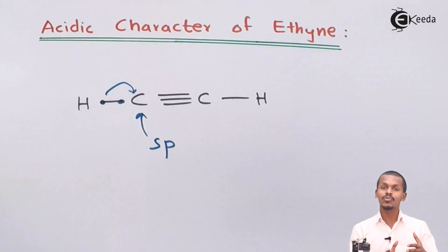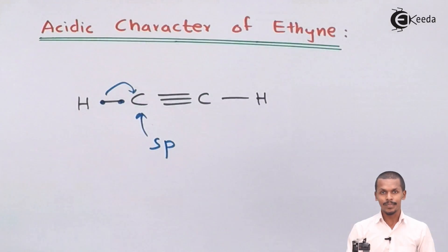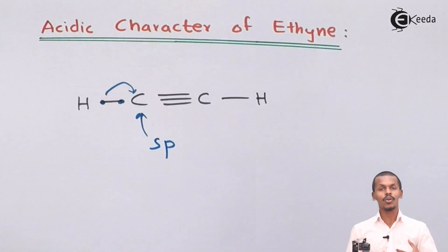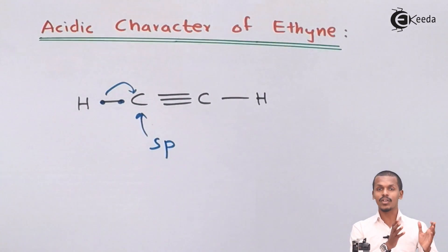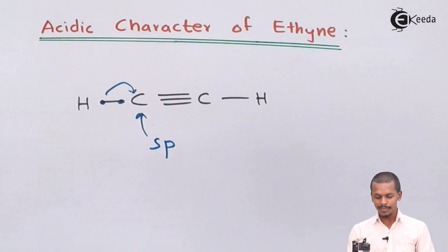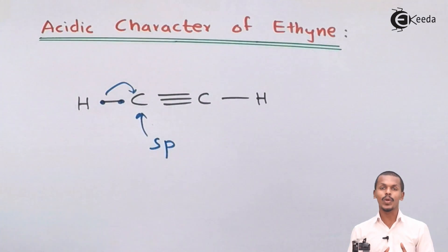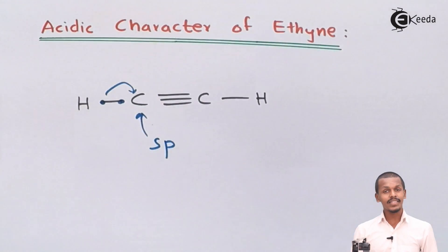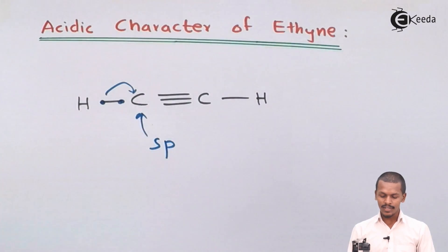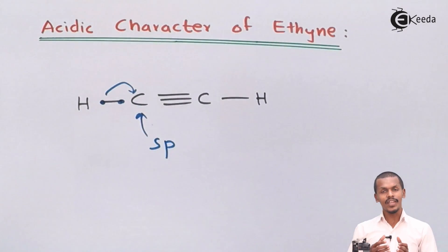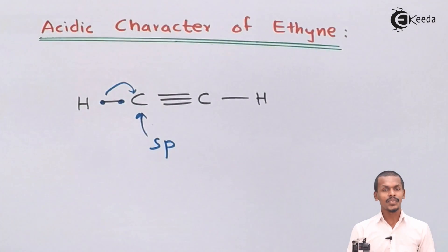The carbon atom has more electronegativity and that's the reason it will acquire the electrons of the hydrogen towards itself more. And that's the reason that the hydrogen can be liberated in the form of a proton H+. This is why hydrogen can be easily dissociated compared to that of ethane and ethene, and that's the reason ethyne basically shows acidic nature.